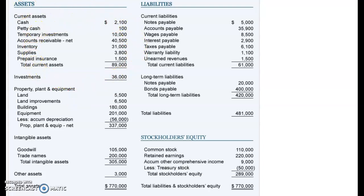On the left-hand side we're looking at assets, and the first thing you'll see on every balance sheet is current assets. Current assets are assets that won't extend over a year — things like cash, accounts receivable you'll collect within the year, inventory you'll sell within the year, supplies, and prepaid expenses.